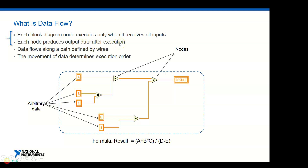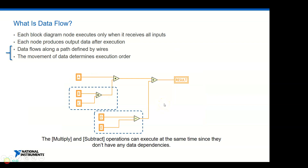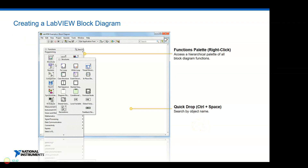The movement of data determines execution order. For the Multiply and Subtract operations, both can execute at the same time synchronously since they have no data dependency - inputs B, C, D, E are different so the two nodes execute simultaneously. This is an important feature of LabVIEW called parallelism - it is one of the key LabVIEW data flow paradigms we must observe.